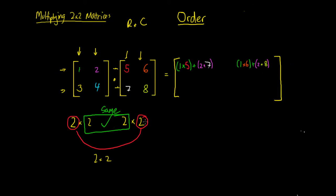Now we've completed our first row — both columns are done. We need to complete our second row. Going down to our second row, we've got the number 3. We multiply the first term in our row, 3, by the first term in the column, which is 5. Then we add to that the second term in our row, which is 4, multiplied by the second term in our column, which is 7. So we go to our next column.